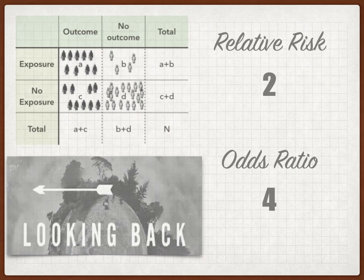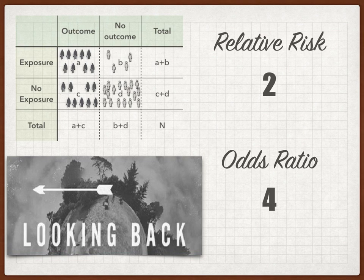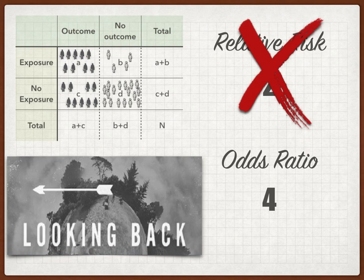A few important things to note: they both travel in the same direction. But we're assuming we knew the actual population incidence — the actual A+B and C+D — when we did the relative risk calculation, which we don't. To some degree, we manipulated that result based on how many people we chose with and without the outcome. The relative risk in this case isn't actually a relevant number, but the odds ratio only used people in the outcome and no-outcome groups. This is a more reliable measure, and particularly useful when comparing multiple studies across different study types, like case-controls to cohorts.